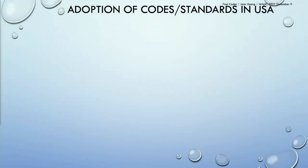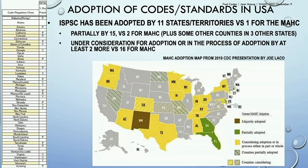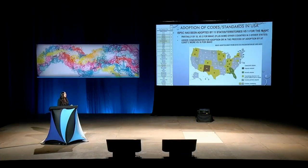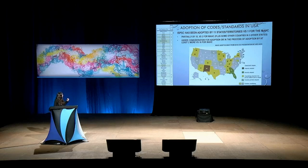Before I go into examples, I want to talk about two model codes that are probably the most prominent in the US. There's the International Swimming Pool and Spa Code put out by PHTA — the left-hand side of the slide shows which states have partially or wholly adopted it. The other map shows adoption of the Model Aquatic Health Code at partial, majority, or local/county level. By and large, the ISPSC has gained a lot more traction and is more recognized. The states highlighted in yellow are the ones I dug into for this project.